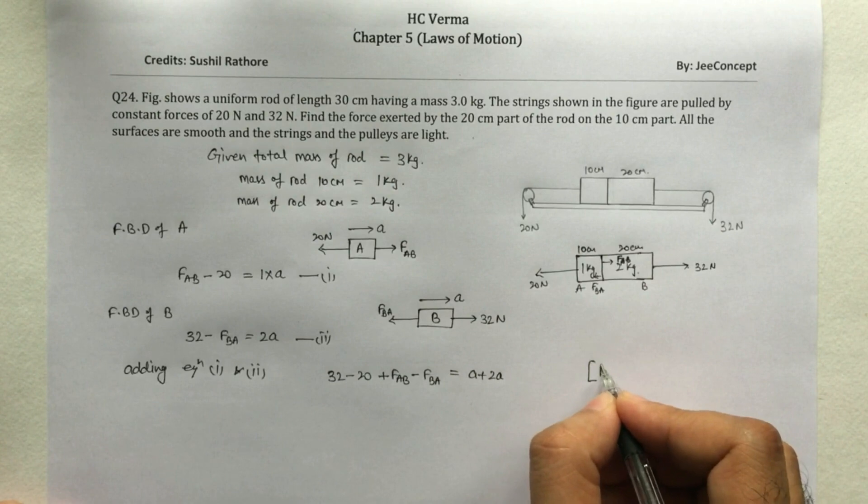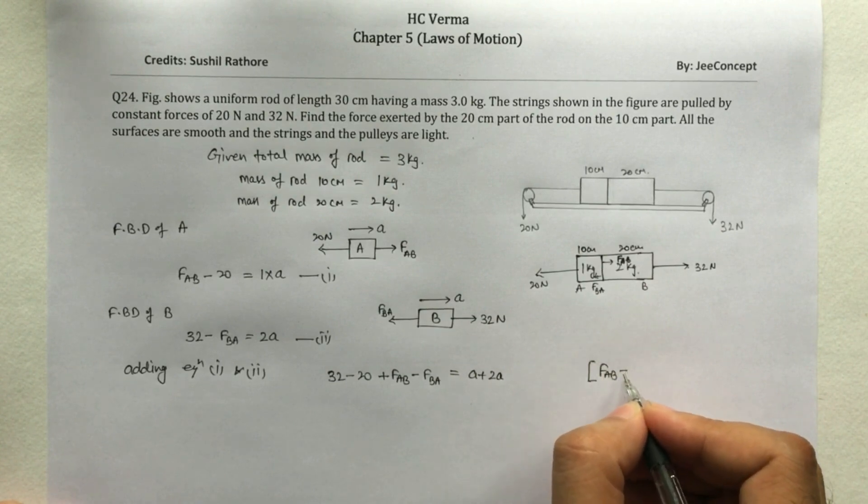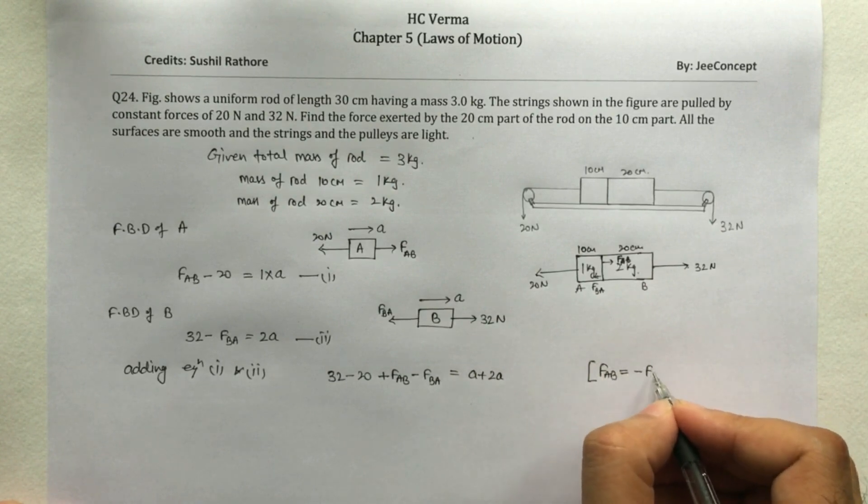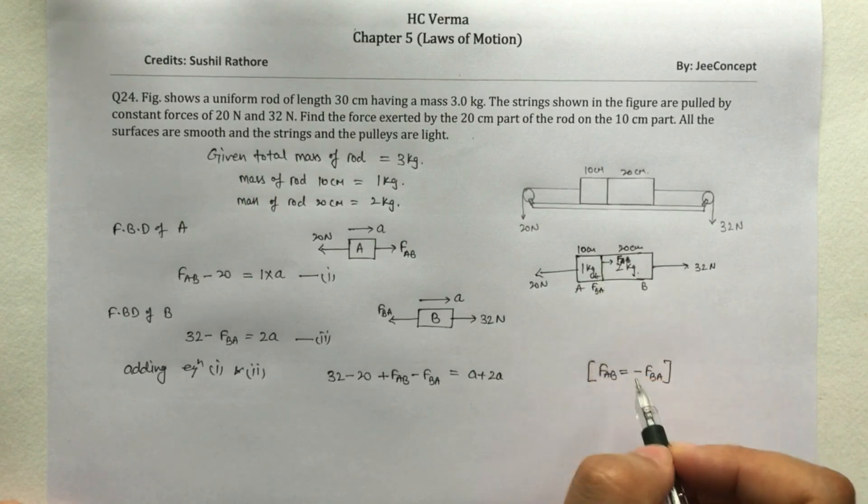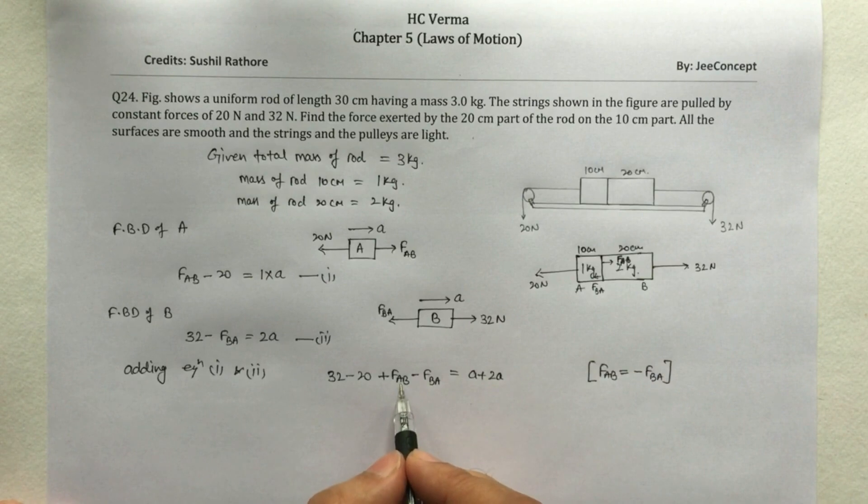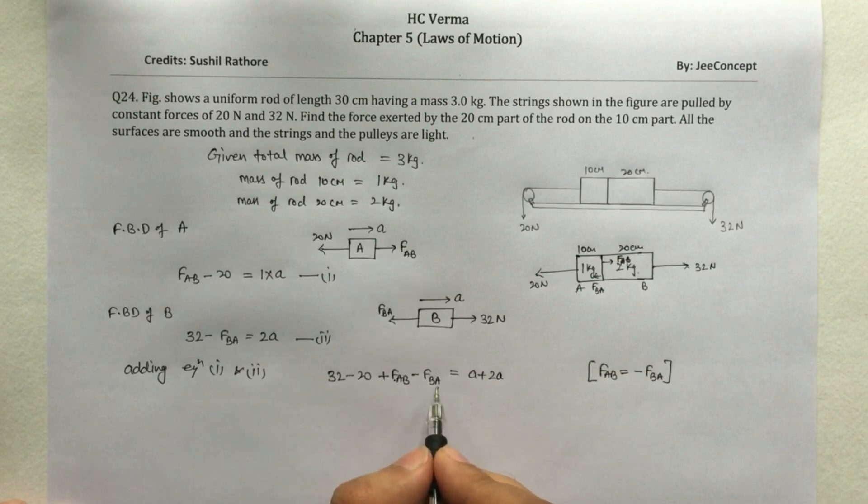Now we know that FAB is equal to minus FBA because these two forces are equal and opposite in direction. So that means this FAB minus FBA will become 0 because the magnitude of these two forces are equal.